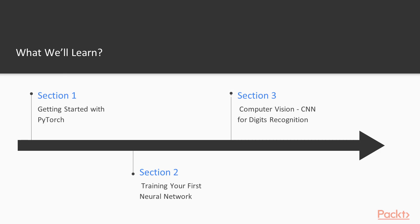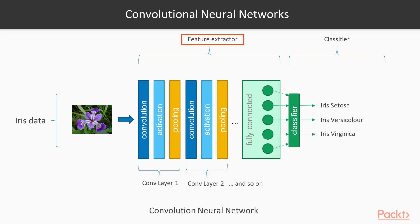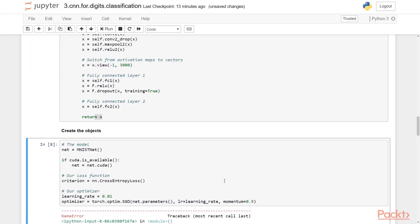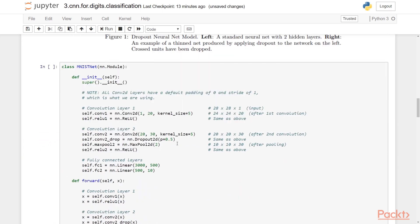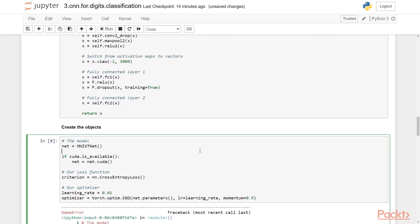Section 3 is called Computer Vision: CNN for Digits Recognition. In this section, we focus our attention on visual data, data encoded in pixels. We learn about convolutional neural networks and concepts like strides, padding, and pooling. As a case study, we will build a model to classify photos of handwritten digits and numbers from 0 to 9.